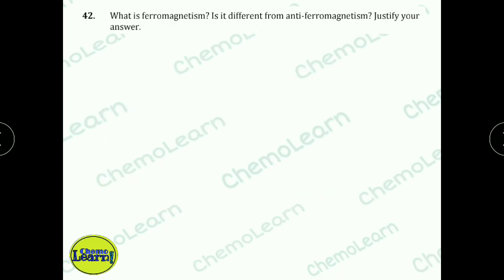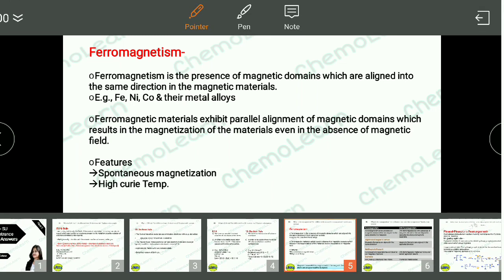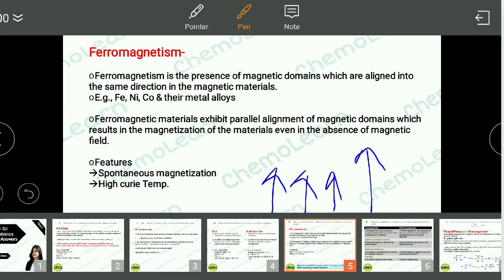Next question: What is ferromagnetism? Is it different from antiferromagnetism? There are 5 types of magnetic materials: diamagnetic, paramagnetic, ferromagnetic, antiferromagnetic, and ferrimagnetic. In ferromagnetism, the magnetic domains are aligned in the same direction as the applied magnetic field. The magnetic field is so intense that we can remove the external field and the material remains magnetized — this is the main characteristic called spontaneous magnetization. Examples: iron, nickel, cobalt, and their metal alloys.